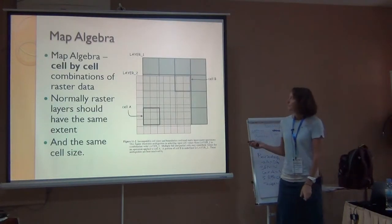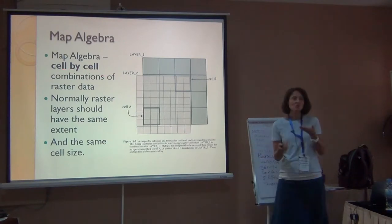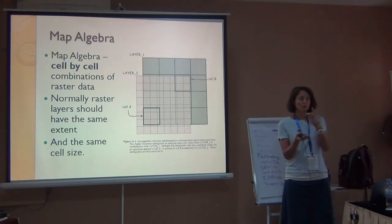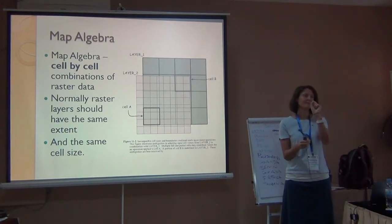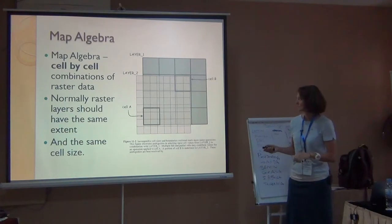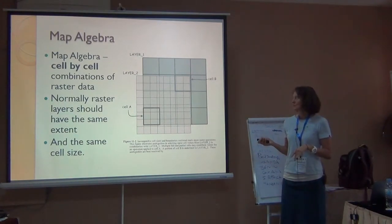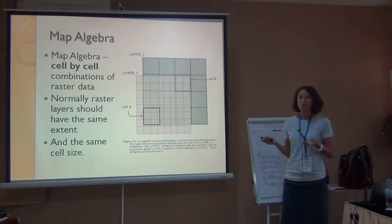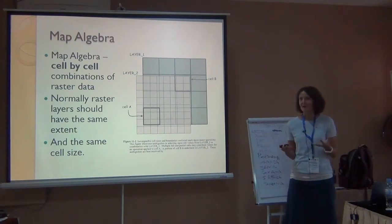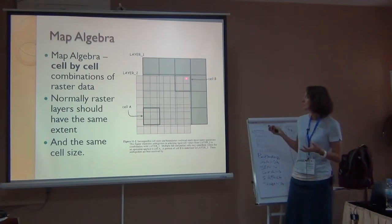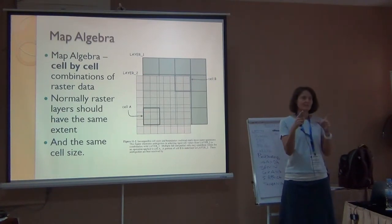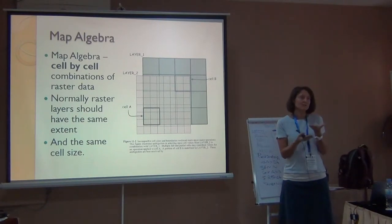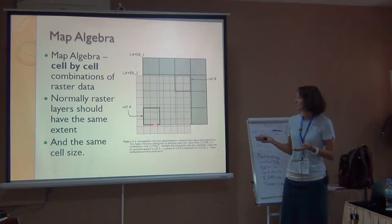So map algebra is a cell-by-cell combination of raster data, so you have multiple, two or more rasters and you're trying to combine the information that's at that same location. Usually, you want a raster that's the same extent. You're only going to get sensical information out of this if the two rasters cover the same area. Although really, if you don't have two rasters that cover the same area, you're just going to keep the part that coincides between both of them.